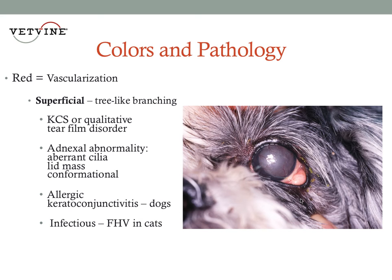In this example, we see superficial corneal vascularization in this Shih Tzu. We see these blood vessels within the tissue. They're superficial, and we know that because they're tree-like and branching. In this case, they're encompassing the entire cornea.